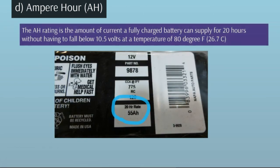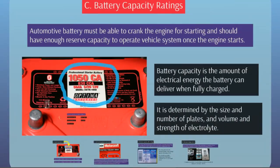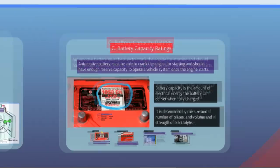The Ampere Hour (AH) rating is the amount of current a fully charged battery can supply for 20 hours without falling below 10.5 volts at a temperature of 80 degrees Fahrenheit (26.7 degrees Celsius). If a battery can deliver 4 amperes under these conditions, it has an 80 ampere hour rating — 4 amperes times 20 hours equals 80 ampere hours. This brings us to the end of this topic.